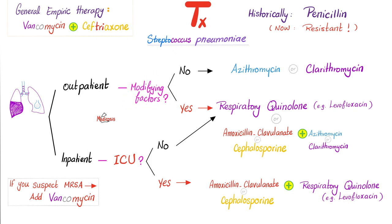Also: COPD, diabetes, kidney failure, heart failure, and cancer are all modifying factors. If they are absent, give azithromycin or clarithromycin. But if you find one or more modifying factors, get serious — give a respiratory quinolone such as levofloxacin.